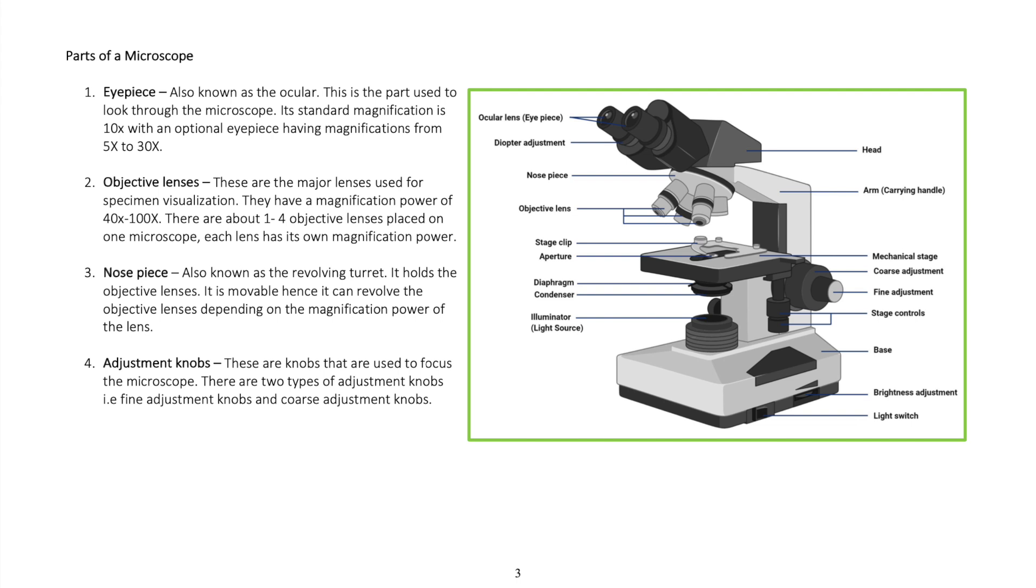Objective lenses are the major lenses used for specimen visualization. They have a magnification power of 40 times to 100 times. There are about 1 to 4 objective lenses placed on one microscope, and each lens has its own magnification power.